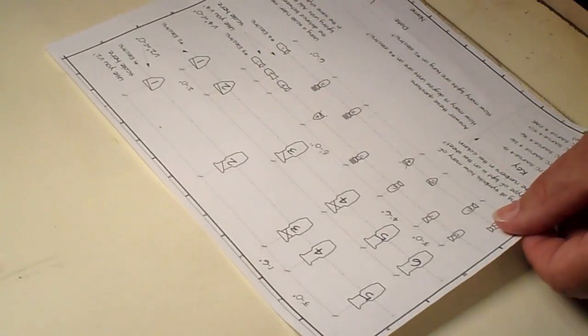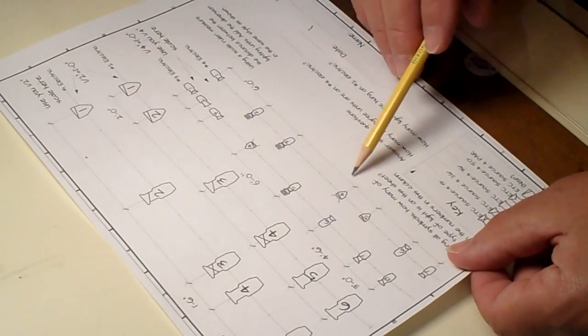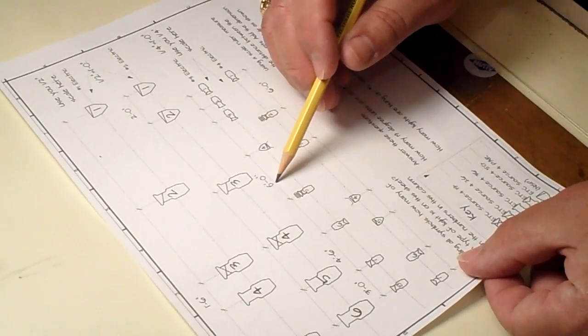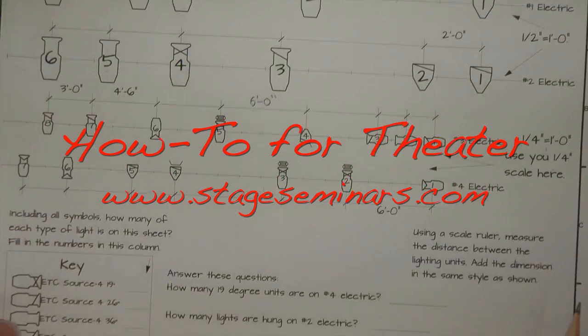To use the whole worksheet as a practice sheet, simply measure the distances between all the units, use the appropriate scales, and write the number in, just like I did here. Use nice, neat lettering, and keep it clean.